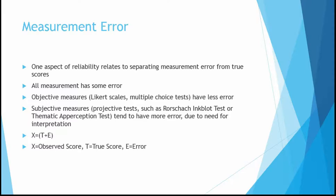Things like Likert scales and multiple choice tests have less error because there's no interpretation. But subjective measures — for example projective tests like the Rorschach inkblot test or the Thematic Apperception Test (TAT) — tend to have more error because someone needs to interpret them. Anytime we get human interpretation involved, we likely generate some error, because we might score something differently than what the true score would be.